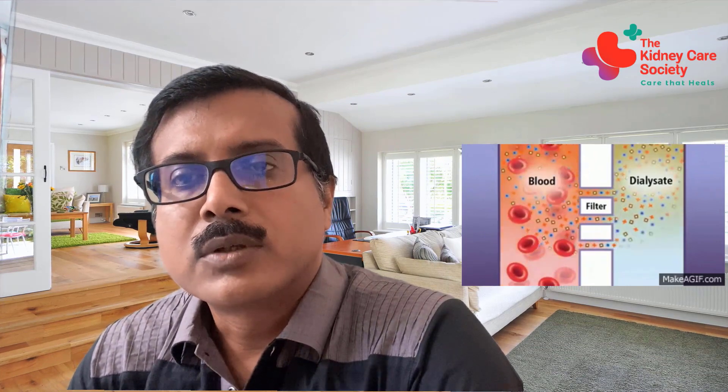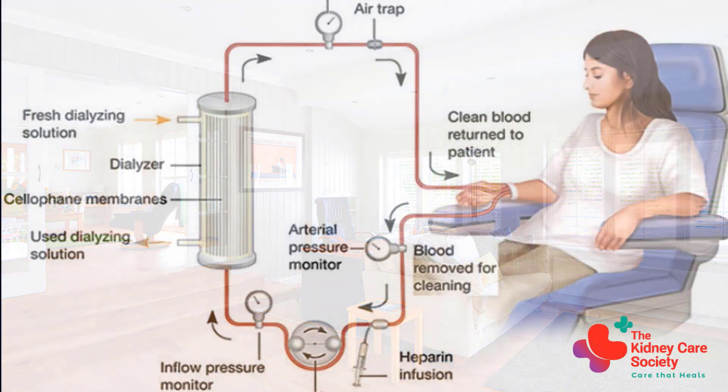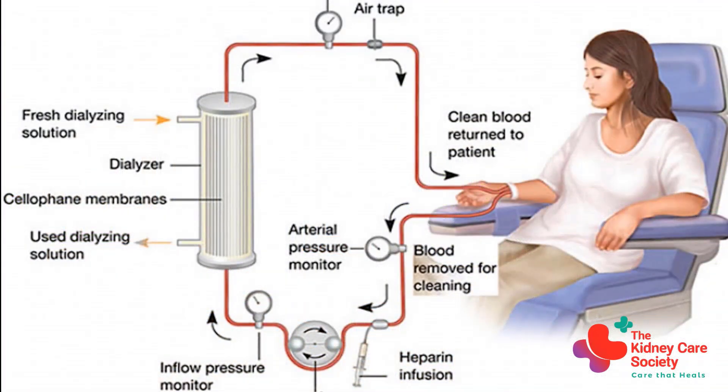We send the blood to a machine, and inside the machine there is an artificial kidney which we otherwise call a dialyzer. That dialyzer purifies or filters out all the unwanted chemical waste which gets accumulated inside the body because of renal failure. Once this purification is done, the same purified blood is returned back inside the body.